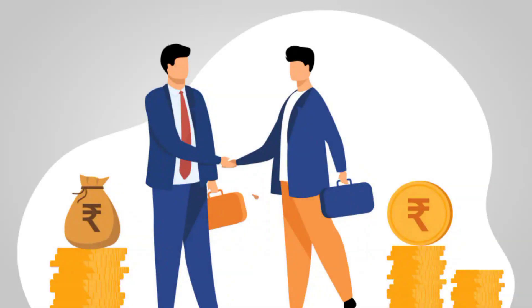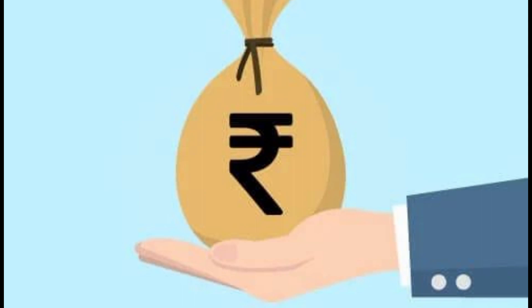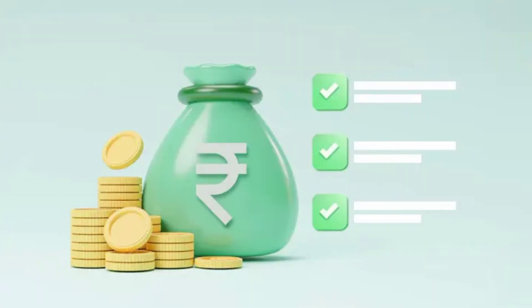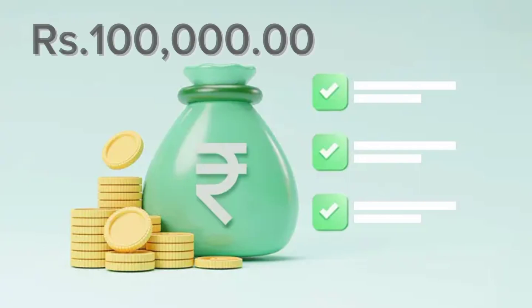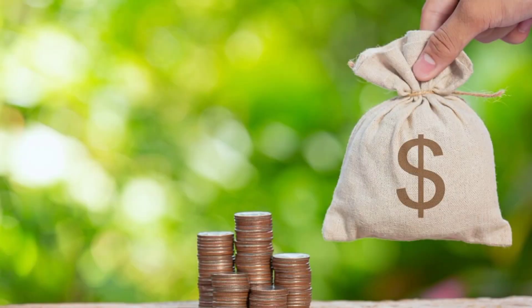Eligibility: you should be aged between 18 and 60 years and be a permanent employee of an organization acceptable to the bank with a minimum of one year in current employment. If you apply for a loan from a commercial bank, your minimum salary or regular monthly net income should be 100,000 rupees. The loan should be fully repaid before the date of retirement, and your regular income should be directed to an account at the commercial bank from which monthly payments could be deducted.